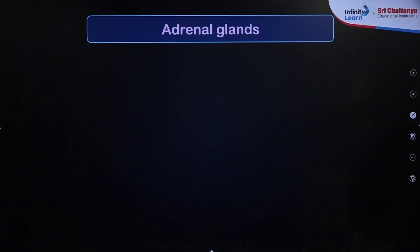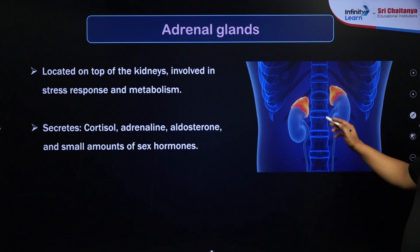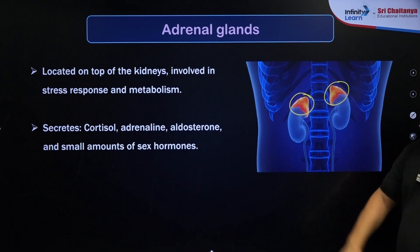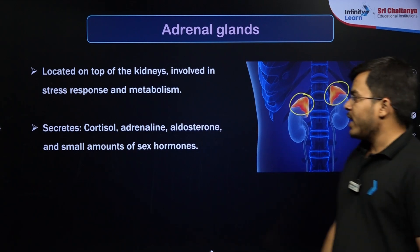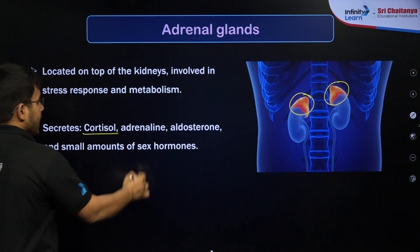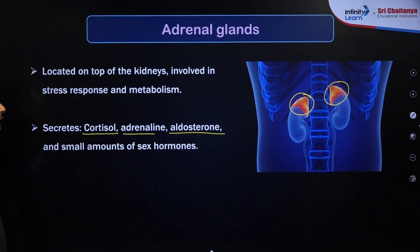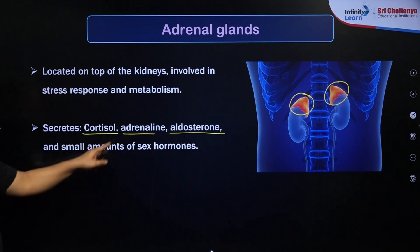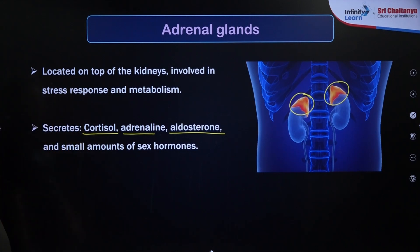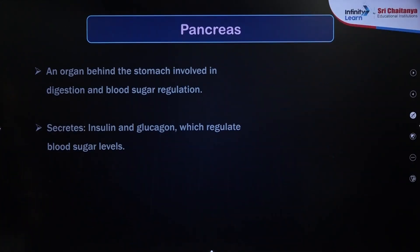Next is the adrenal gland, which is present over the kidneys in a crown or cap-like form. The adrenal gland releases several important hormones, including cortisol, corticoids, adrenalin, and aldosterone. Adrenalin is also known as the emergency hormone, and it is released by the adrenal gland.